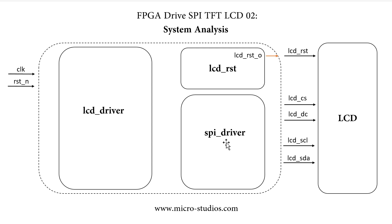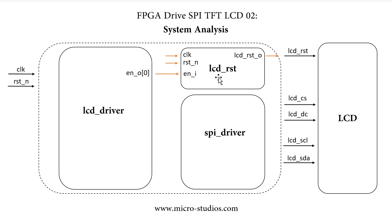For the LCD reset module, we have one LCD reset output signal connected to the LCD. The LCD reset module also has a system clock input, a system reset input, and an enable input signal from the LCD driver module. The LCD driver module uses this enable signal to start the LCD reset module. After the LCD reset module finishes its work, it uses a done output signal to tell the LCD driver module that this part is already done.